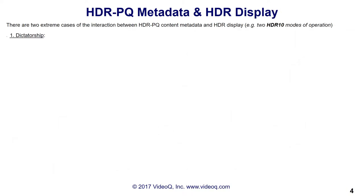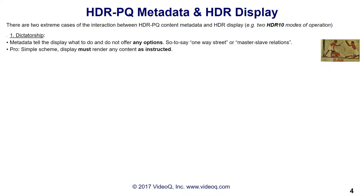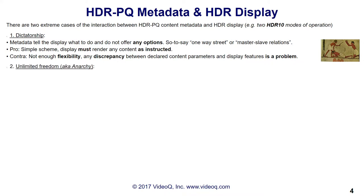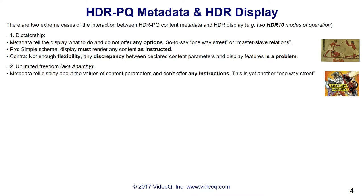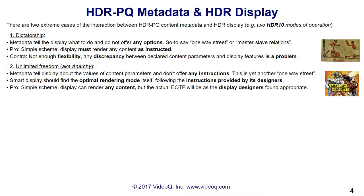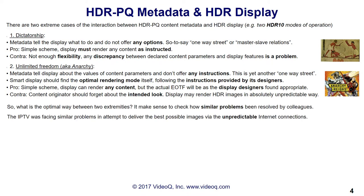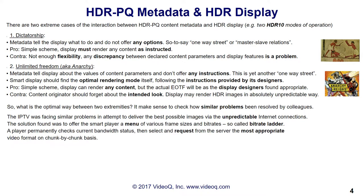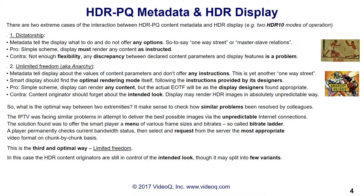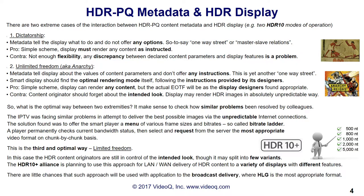There are two extreme cases of the interaction between HDR content metadata and an HDR display. One: metadata telling the display what to do and not offering any options — this is the classic master-slave model. Or two: metadata telling the display about content parameter values and not offering any instructions, leaving all decisions up to the smart display, meaning up to the display designers. Both cases can be undesirable. There is a third and optimal way: let the display select from a limited number of options prepared by the content originator. HDR10 Plus supports this model, however it doesn't work well for traditional broadcasting where hybrid log gamma is a more appropriate format.